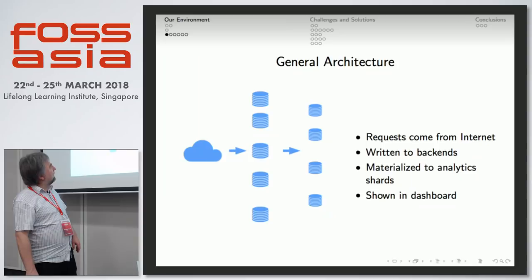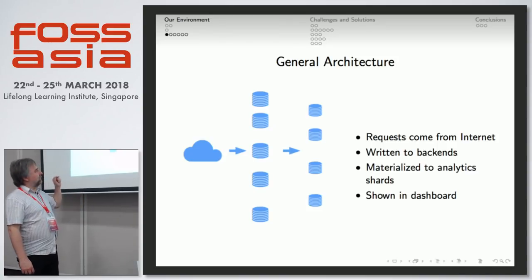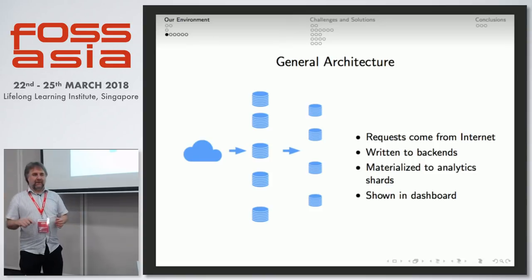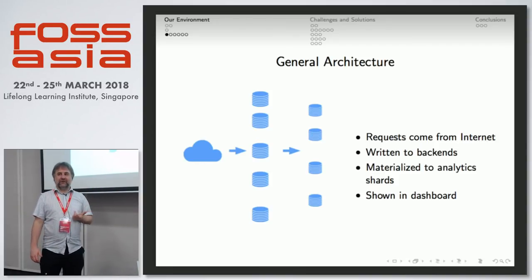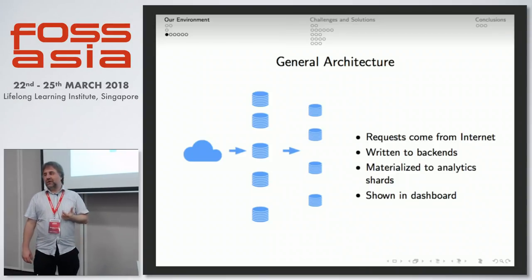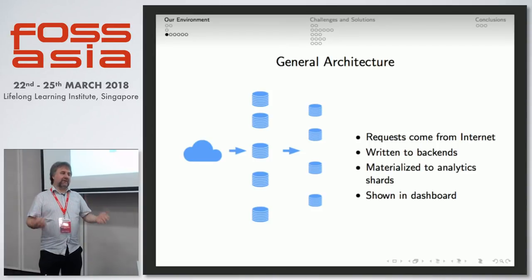Here's our general architecture. Requests come in from the internet, they get routed to the backends via HAProxy in a round-robin way — HAProxy just directs the request to the next available backend. Then in a tight loop, we have a program that runs inside PostgreSQL on the backend, written in PLPGSQL, which takes that data and sends it out to all of the analytics shards. We have no locatability of any data — we don't know where a given request is going to end up, but it gets tagged so we know it was processed by, for example, backend seven.